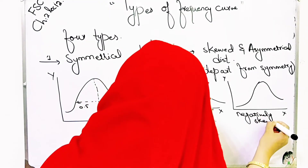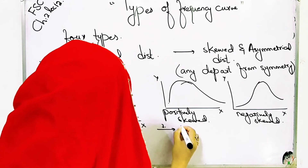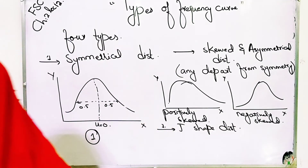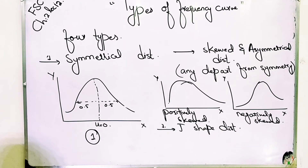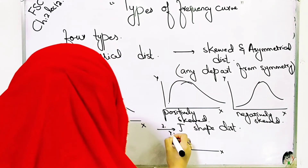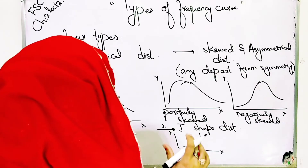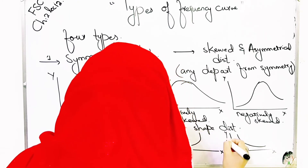The third type is the J-shape distribution. Here the frequencies run up to a maximum at one end of the range, having the shape of the letter J. It can also be reversed. Most distributions in economic and medical statistics belong to extremely skewed or J-shape distributions.